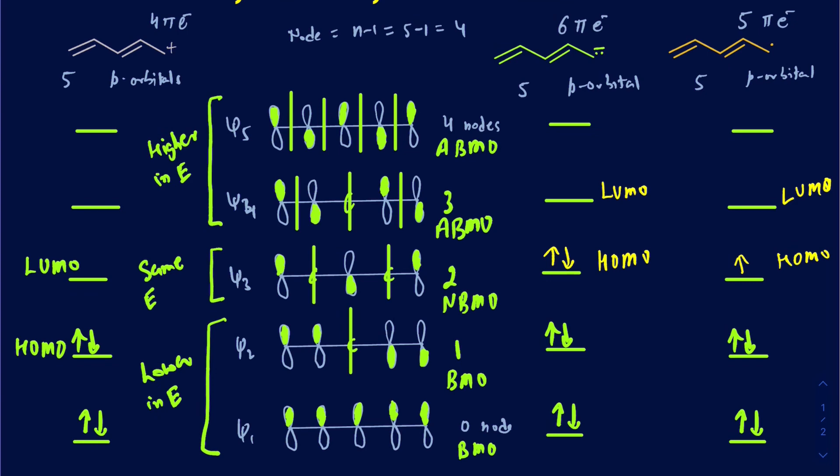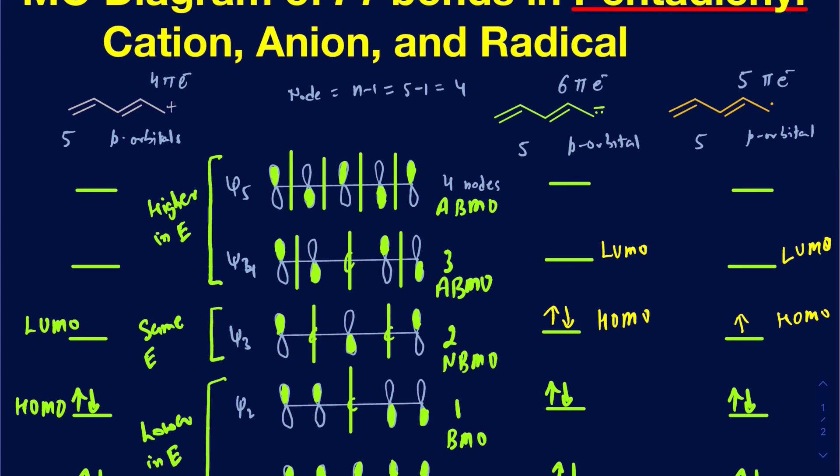This is how you draw those up, and if you understand this, you can draw molecular orbital diagrams for a four orbital set or even a six orbital set and so on. If you have any questions, feel free to leave any comments in the section below.